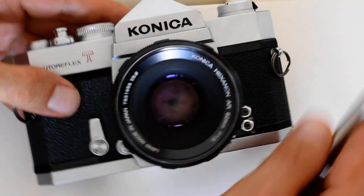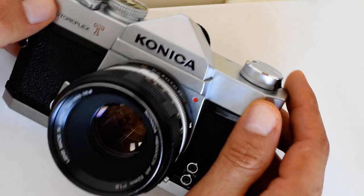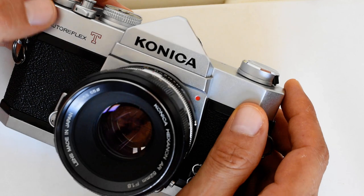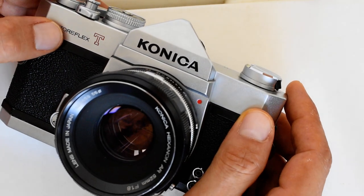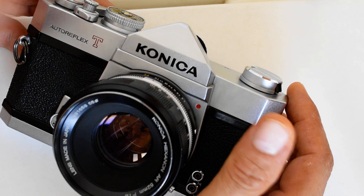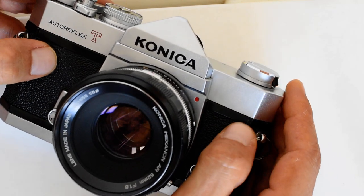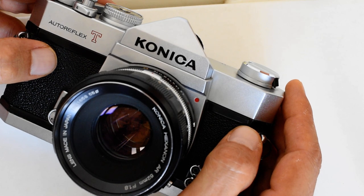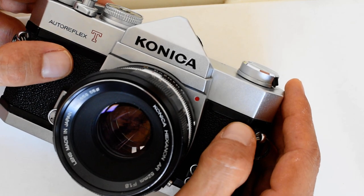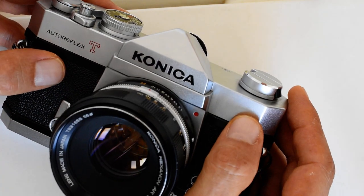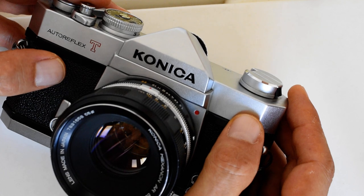Alright, so that about wraps it up for my review of the Autoreflex T2. This is definitely a camera worth considering. It is the most commonly available of the Autoreflex series, this and the TC, although the TC is a bit of a different critter due to its smaller size and use of plastic. But I will, I do have a TC and I will be reviewing that more fully. I think I did a preview of the TC some time ago, but I will do a more full, complete review of the TC here in the not too distant future.